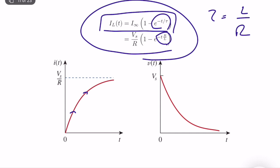The inductor voltage goes to zero as T goes to infinity. Why? Because in steady state conditions, the inductor acts like a short circuit, which means the voltage across the inductor should always go to zero. So this is the basic idea, and as you can see, the whole picture is very similar to the RC case.